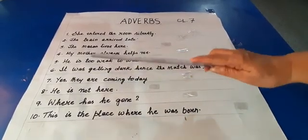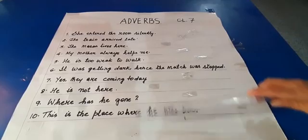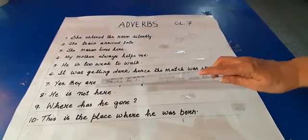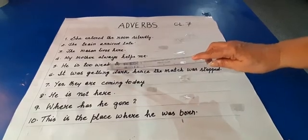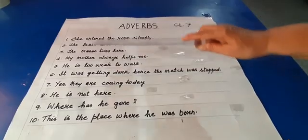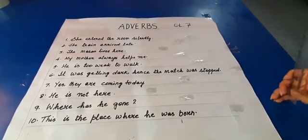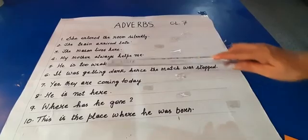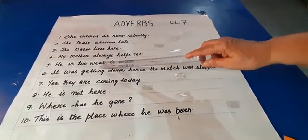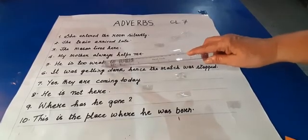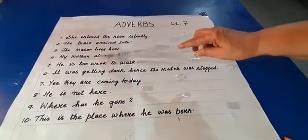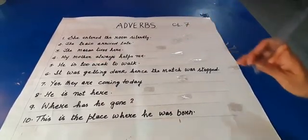Sentence five reads: he is too weak to walk. 'Is' is my verb. In this sentence, 'weak' is an adjective describing the pronoun 'he.' Now I'm going to ask the question — how weak is he? And you will get the answer 'too.' Therefore, in this sentence 'too' is the adverb.